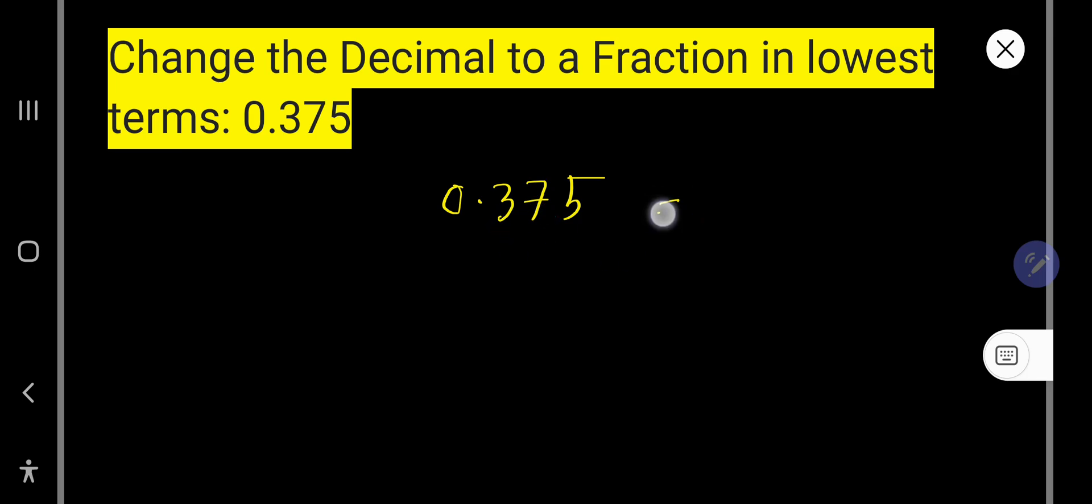So at first you have to remove this decimal point and write the number you are getting as a numerator of a new fraction. So this is your numerator after removing this decimal point.